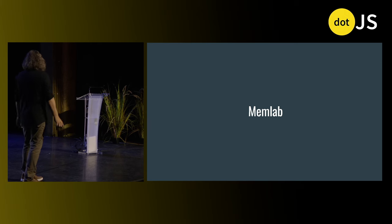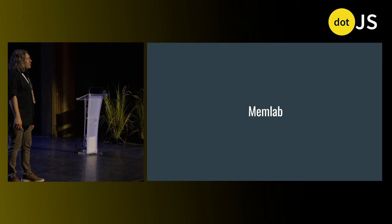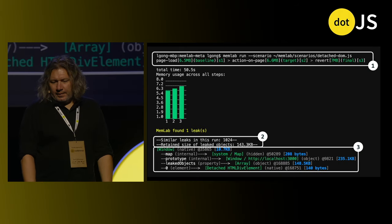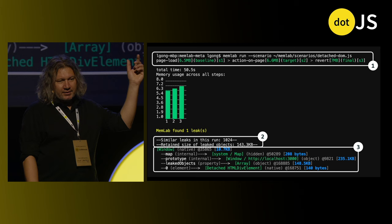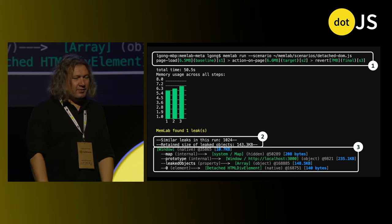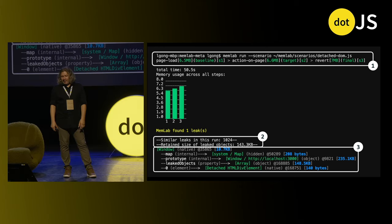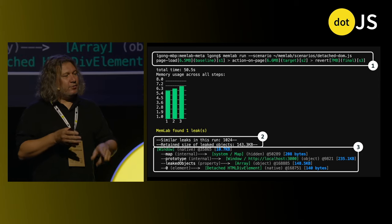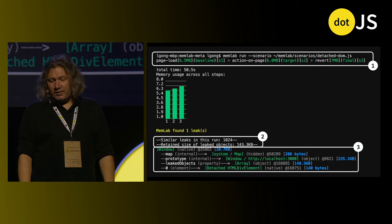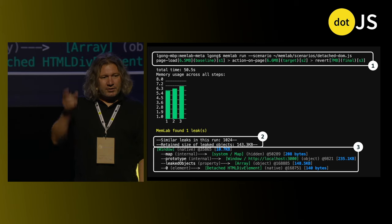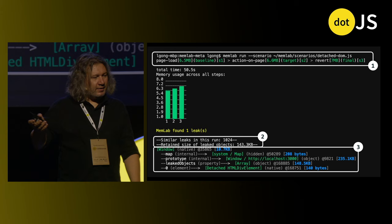Enter MemLab. It's an open source command line tool by Facebook that's been used to find memory leaks, including some in React itself. Each bar represents memory consumption — the initial load, the action, and then going back. In this case, we're leaking memory no matter what we do. The main goal of MemLab is to make an intelligent diff of the snapshot before and after, and pinpoint exactly what is the source of the leak. It found one leak, leaking about a thousand objects, and gives you a path to the first one so you can find it and fix it.